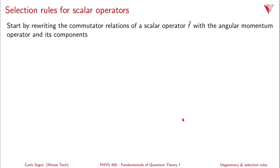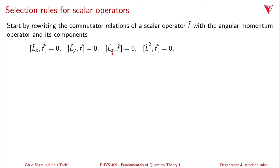The next thing we want to talk about is the selection rules for scalar operators. Selection rules are nothing more than understanding how the matrix that represents an operator behaves. Let's start by rewriting commutation relations of a scalar operator F with the angular momentum operator and its components. Let's assume that F commutes with Lx, Ly, and Lz. It therefore also commutes with L squared, and because it commutes with Lx and Ly, it commutes with L plus and L minus.